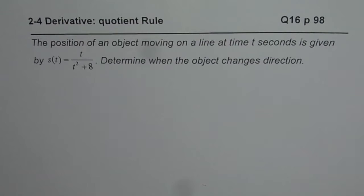The question here is: the position of an object moving on a line at time t seconds is given by s(t) equals t over t squared plus 8.